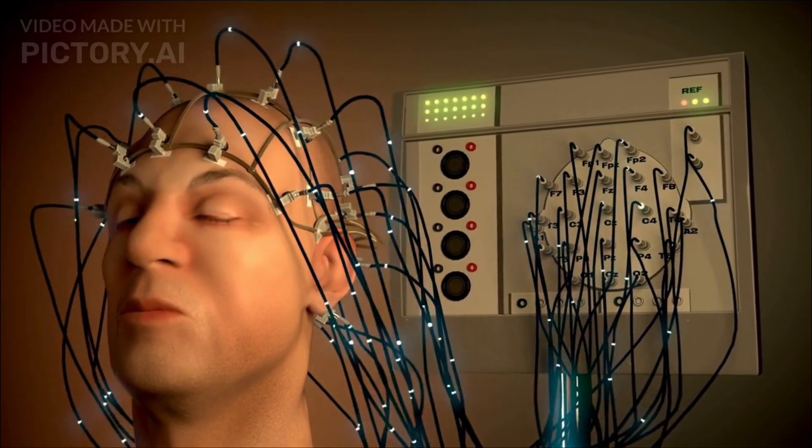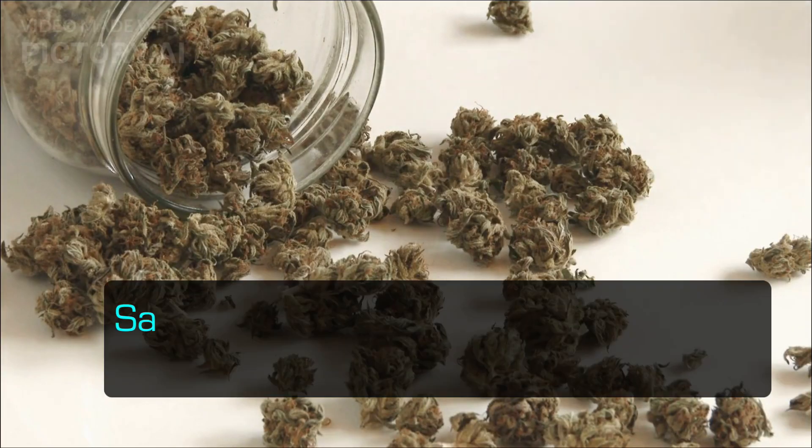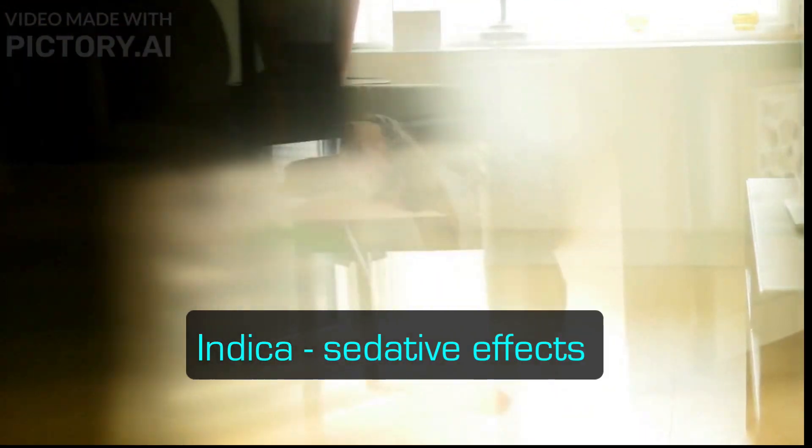Sativa varieties of cannabis tend to elevate mood and focus, while the indica varieties, also known as in-the-couch, tend to have more sedative effects. These different effects are due to the activation of CB1 receptors in different parts of the brain.